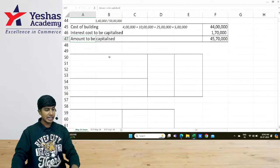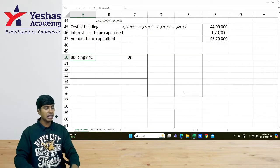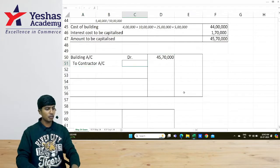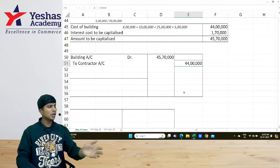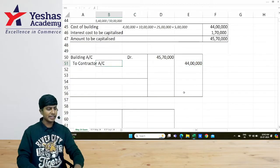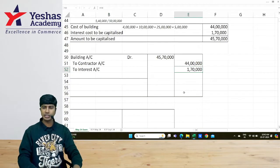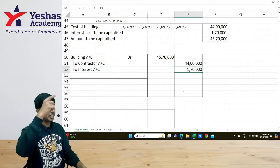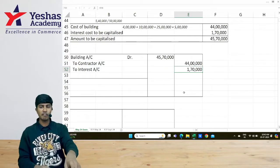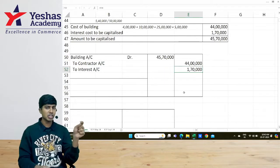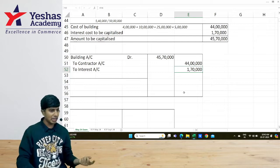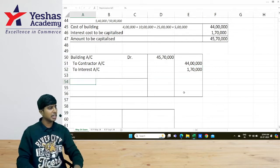Shall we write the entry? I will write building account debit, ₹45,00,70,000. In this, ₹44,00,000, I need to pay the contractor for constructing. You can write bank account. And then the balance amount, I would write it to interest. Later, when I pay the interest and write interest to bank, to the extent of ₹1,00,70,000, interest will not be transferred to PL because it is capitalized. Balance of the interest has to be charged to PL.